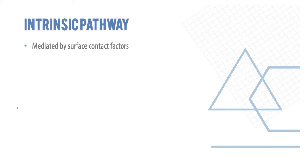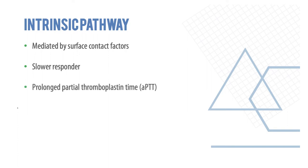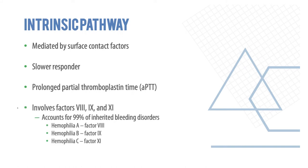The intrinsic pathway is mediated by surface contact factors. Unlike the extrinsic pathway, this is a slow responder, and activation is seen as an increased aPTT, compared to increased PT in the extrinsic pathway. It involves factors 8, 9, and 11. This accounts for 99% of inherited bleeding disorders: hemophilia A is factor 8 deficiency, hemophilia B is factor 9 deficiency, and hemophilia C is factor 11 deficiency.